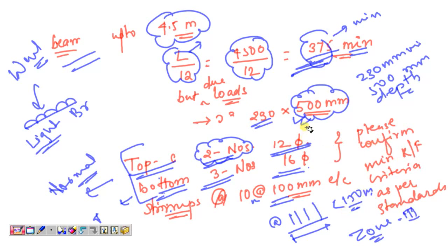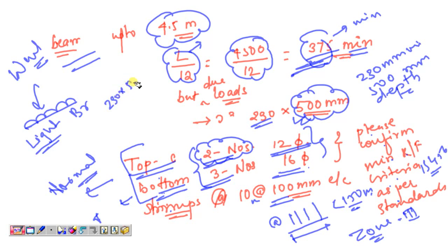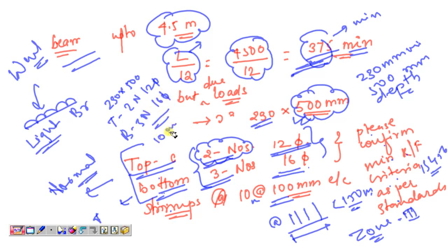When providing this reinforcement, please confirm that it meets the minimum reinforcement criteria as per IS 456 or any relevant international standard. To summarize: beam size 230 mm × 500 mm, top reinforcement 2 numbers of 12 mm dia, bottom reinforcement 3 numbers of 16 mm dia, stirrups 10 mm dia at 100 mm center-to-center.